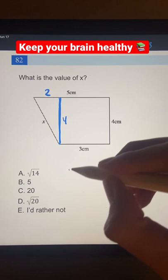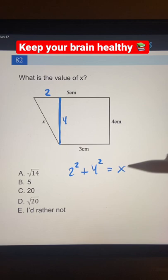So now we can set up the Pythagorean theorem, which is going to be two squared plus four squared. That's going to be equal to the missing side length hypotenuse, which is x squared.